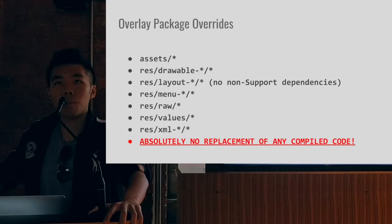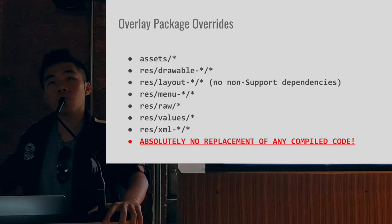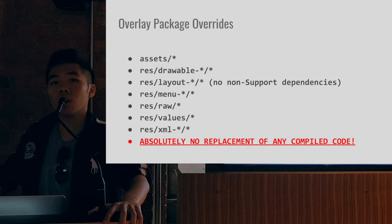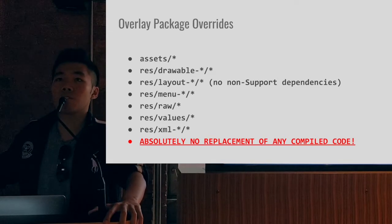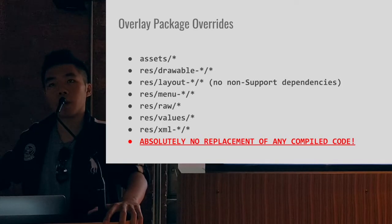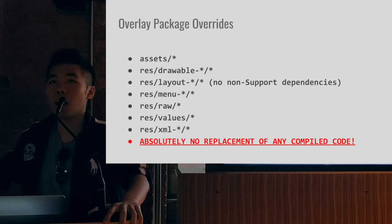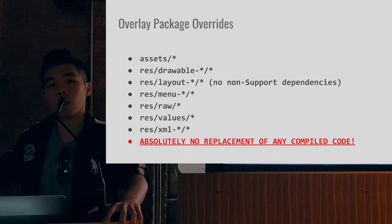One of the most important points: you can replace any application's assets and resources without elevated root or permissions, just by using an overlay package being installed. However, you can't modify layouts without non-support dependencies — if you're modifying a System UI class, some are dependent on the class being present at compile time; if those dependencies are required, it will fail. Crucially, you cannot replace any compiled code — no Java, no Kotlin, no binaries, no JNIs. I want to stress: if you're putting any sensitive files into your assets folder or res folder, stop doing that now, because you can take the context of any application and take those resources out and use them in your own app — basically hijack them.